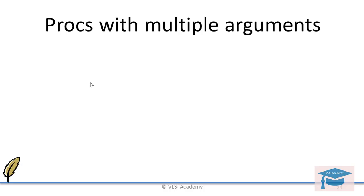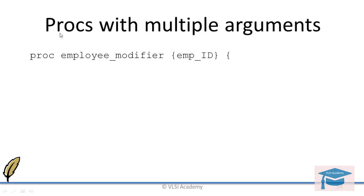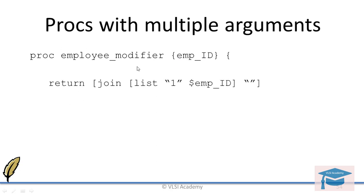Now let us see one more example where your manager asks you to update the employee ID of all employees. For example, if your employee ID is 1234, you are asked to update it to 11234 — that is, add one as a prefix to each employee ID. So the proc is called employee modifier, and the argument is employee ID. Each employee ID will be given as an argument to this function. Then you return a statement that creates a list where one and the employee ID are put together as a list.